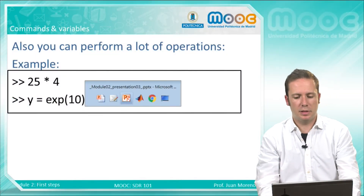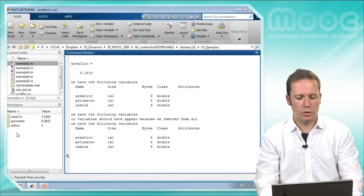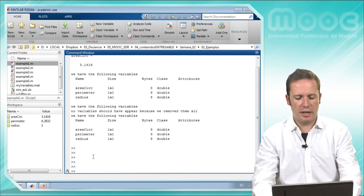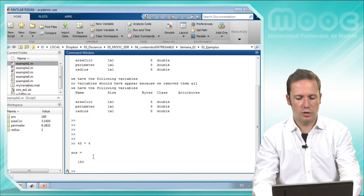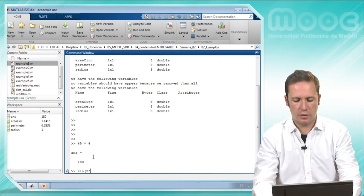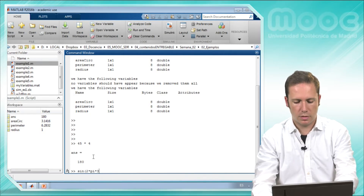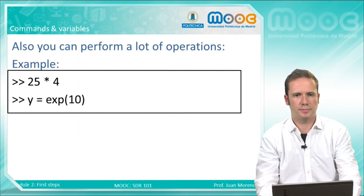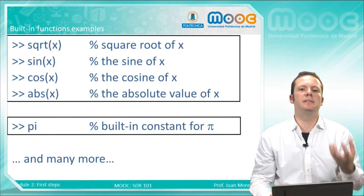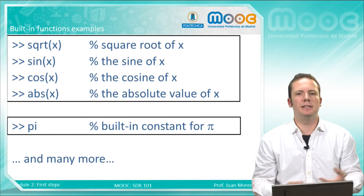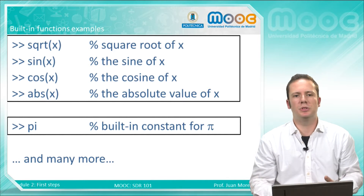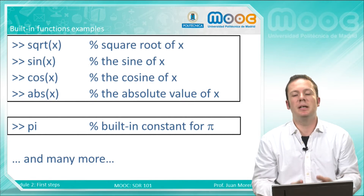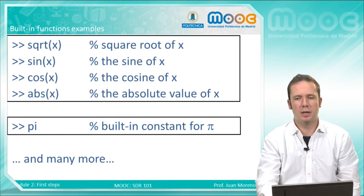In the MATLAB command window, you can perform any single operation that you want — you can do a lot of calculations here and obtain their values. You have a lot of built-in functions in MATLAB to calculate almost everything that you need: the square root, the sin, the cosine, the absolute value. There are also a lot of built-in constants like pi, and many more.